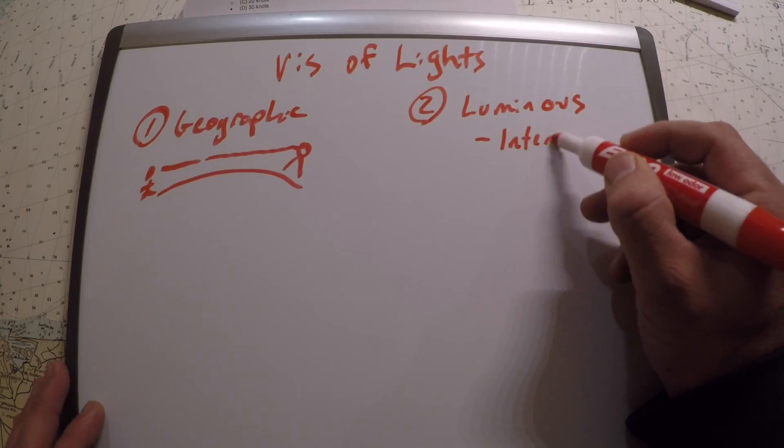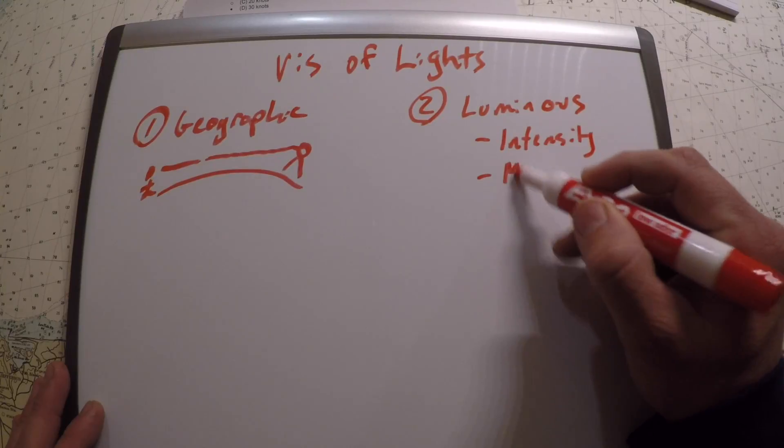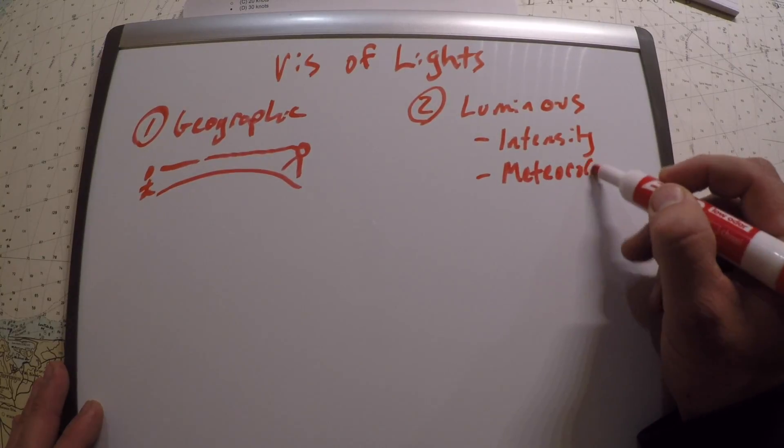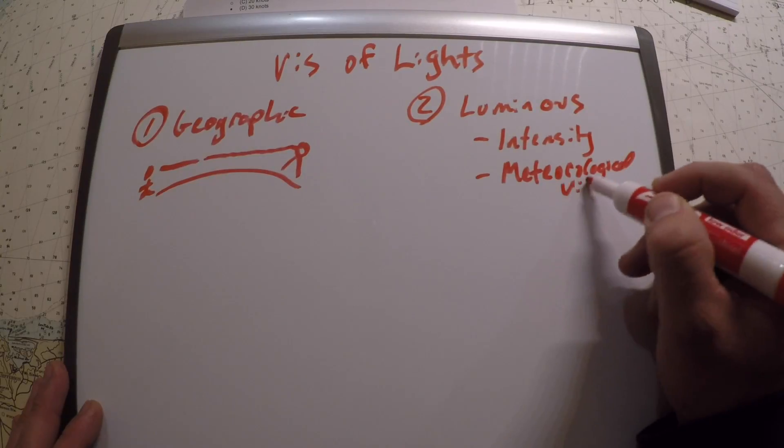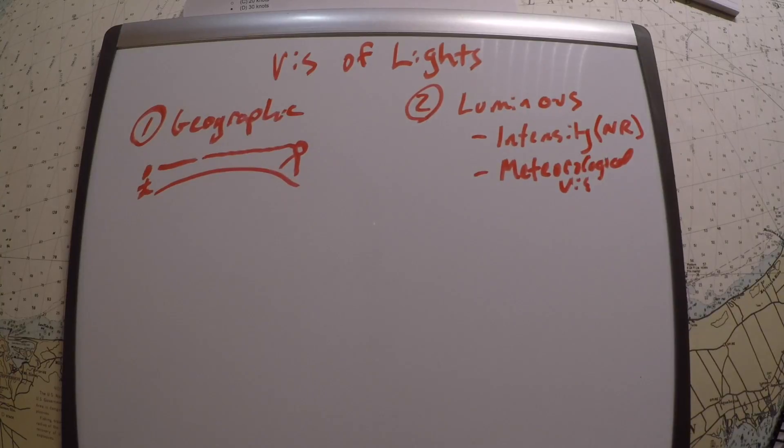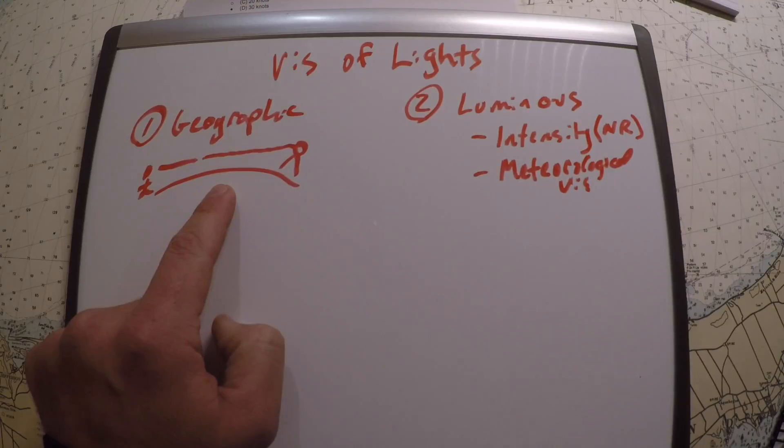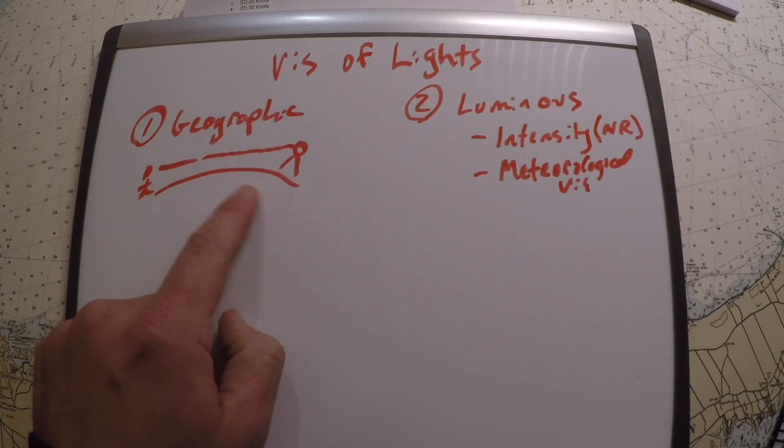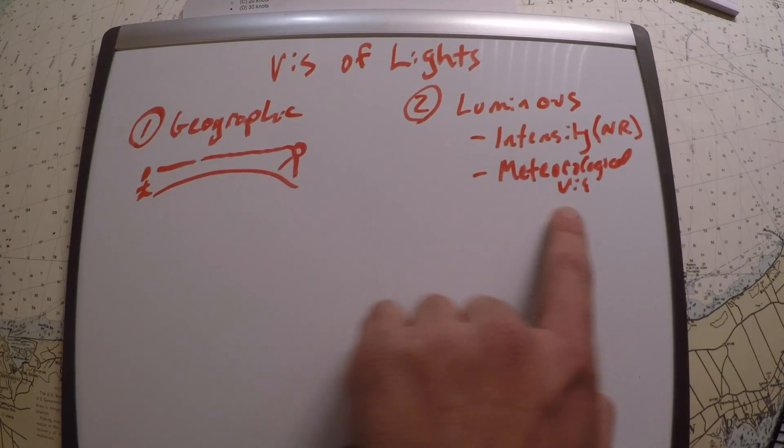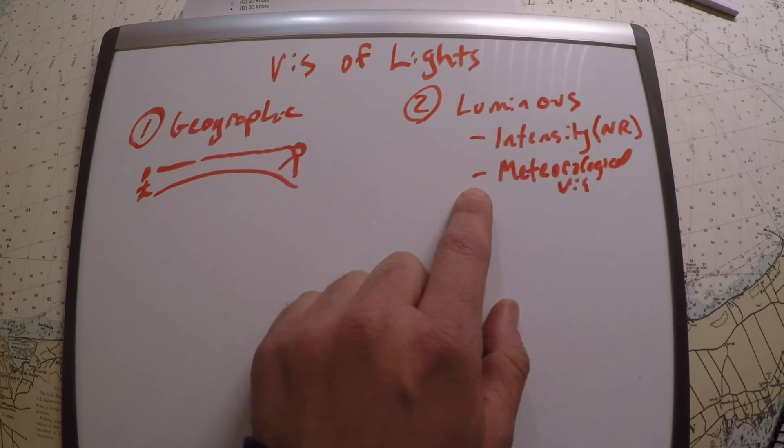And then the second thing is the luminous range, which is based on two things: the intensity of the light and the existing meteorological visibility. This is otherwise known as nominal range, the intensity of the light. Think of the geographic range like there's no atmosphere and you're really just limited by the curvature of the earth.